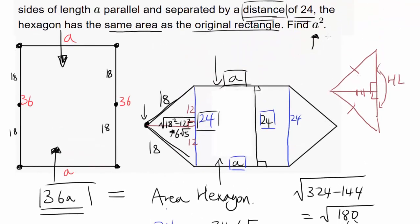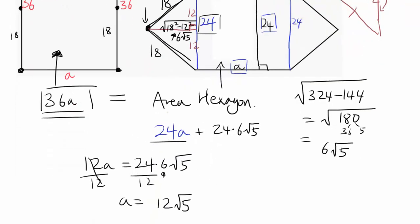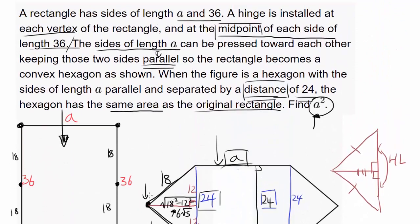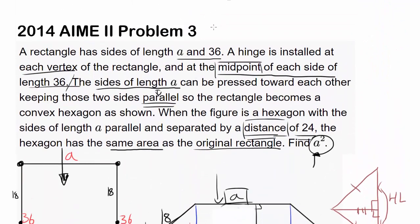And the question asked us to find a squared, and we can do that. a squared is going to be 12 squared times 5, also known as 144 times 5, also known as 720. So the answer to this question, the value of a squared is 720.